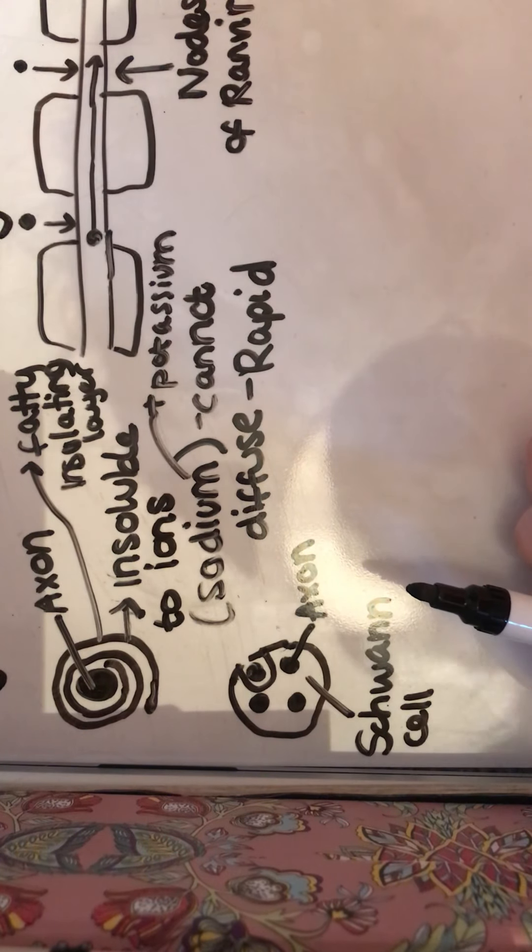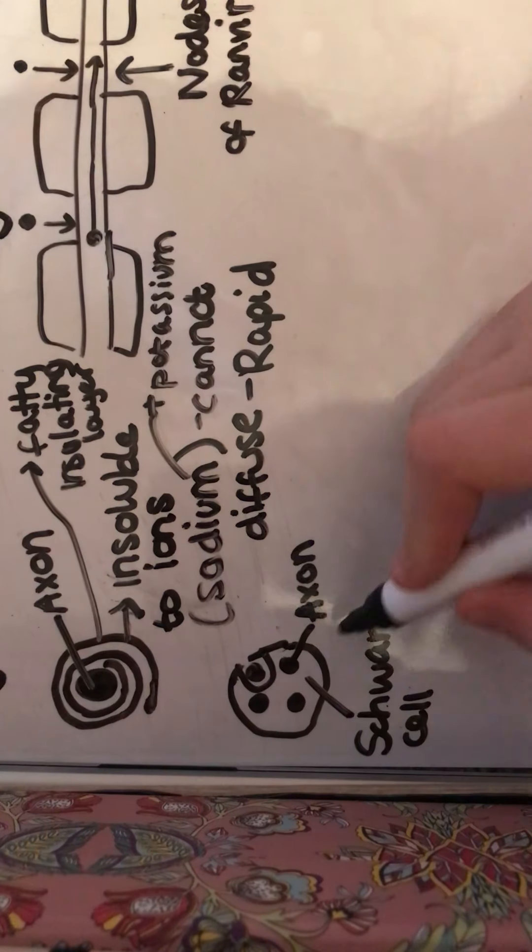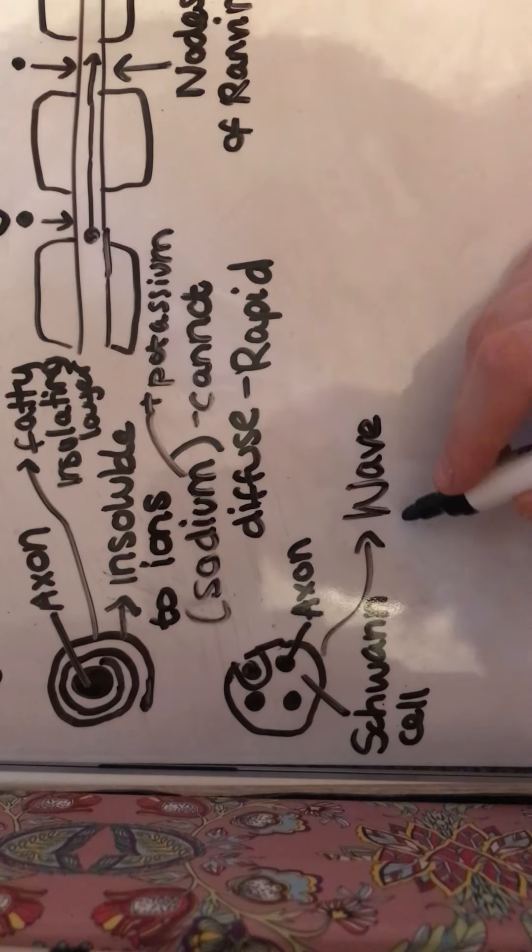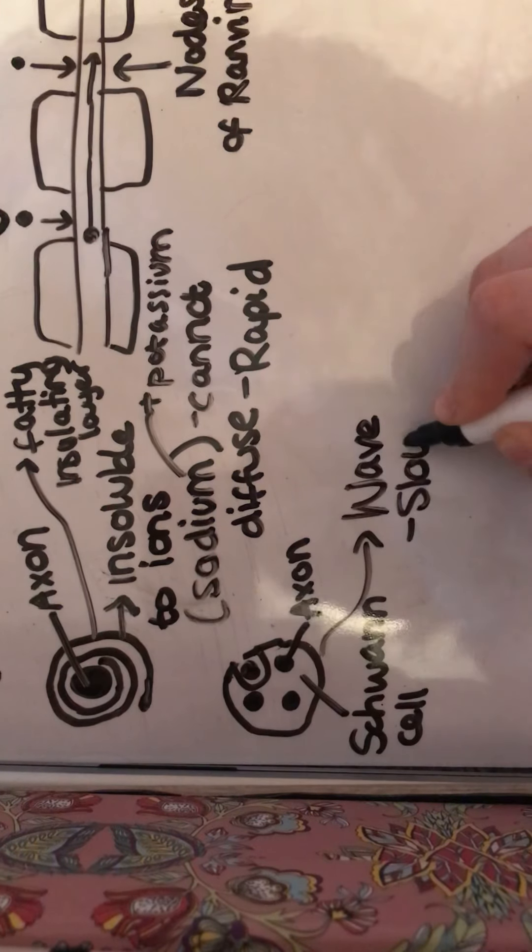So an action potential can move across the neuron in a wave, so it's more of a wave-like conduction, which as you can imagine is much slower.